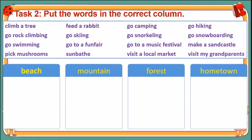Look at the words in the box: climb a tree, go rock climbing, go swimming, beat musk drums, feed the rabbit, go skiing, go to a fun fair, sunbathe, go camping, go snorkeling, go to a music festival, visit a local market, go hiking, go snowboarding, make a sand castle, visit my grandparents. You have 3 minutes to do this task.